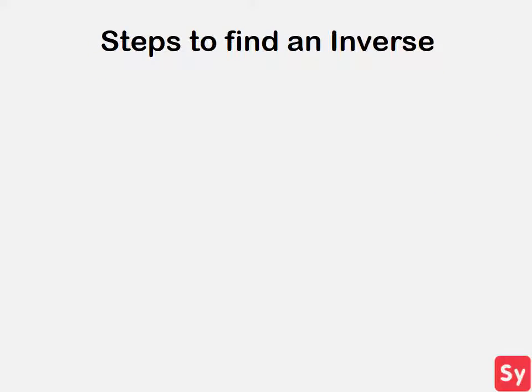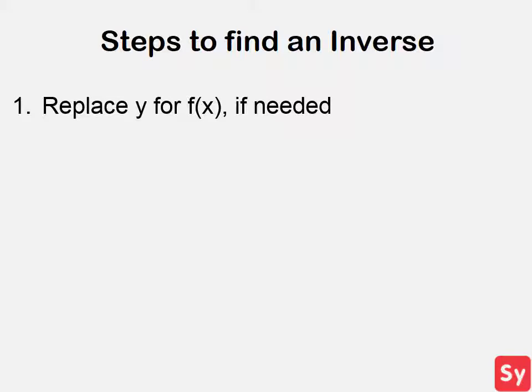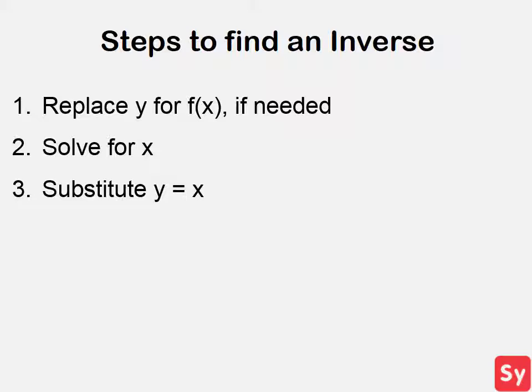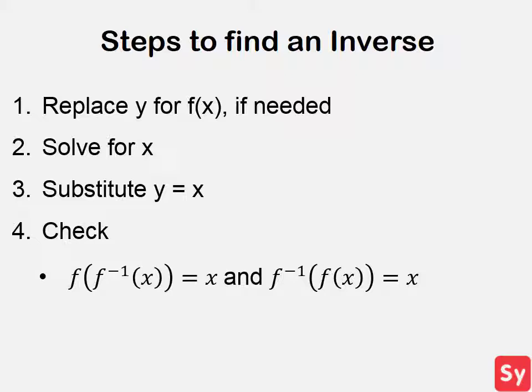In order to find an inverse of a function: first, replace y for f if needed. Next, solve for x. Then substitute y for x and x for y. Finally, check to see if the inverse is right by using either of these equations.